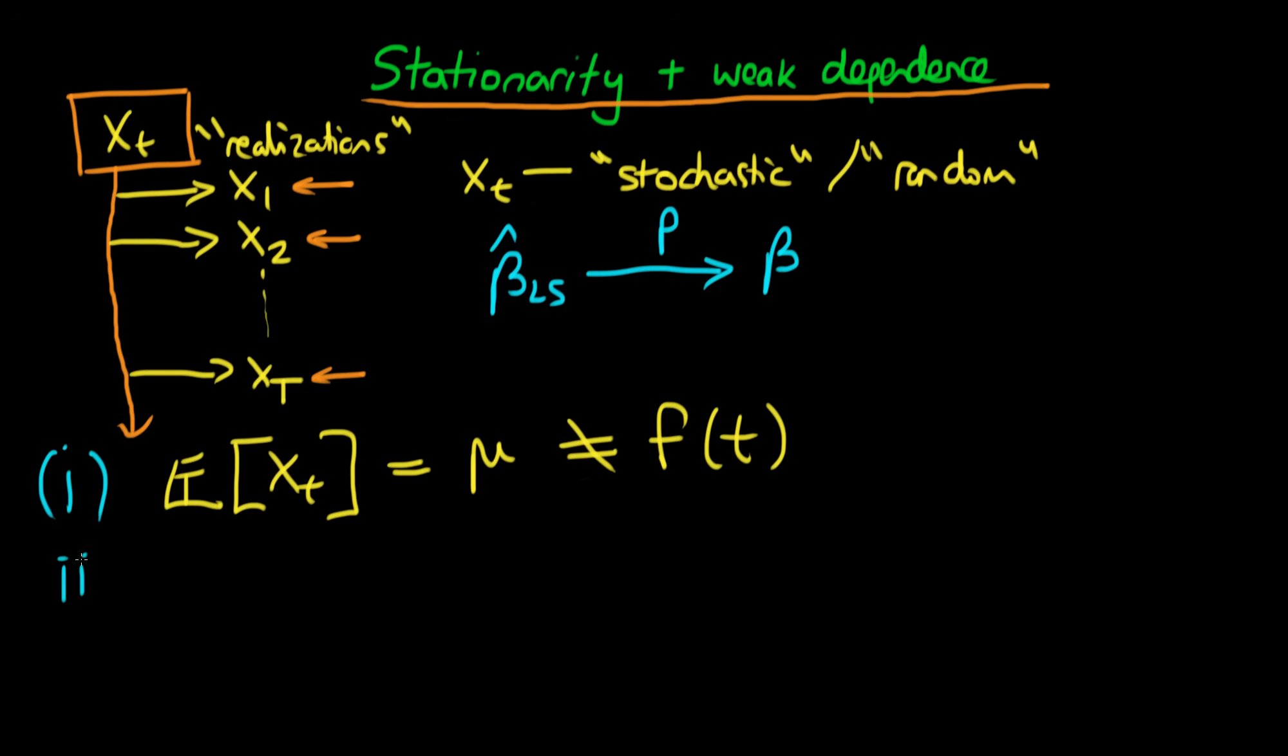The second condition is that the variance of our process, the variance of Xt, is not a function of time. So the variance equals sigma squared, where sigma squared importantly is not a function of time either. That means the variance is constant across time.